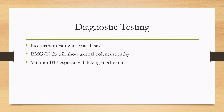In terms of diagnostic testing, no further testing needs to be done in a diabetic that has a typical case of the disease. But if further testing is done, the EMG and nerve conduction studies will show axonal polyneuropathy. Vitamin B12 can be a helpful lab test, especially in a diabetic with worsening symptoms, because metformin specifically blocks the intestinal absorption of vitamin B12.